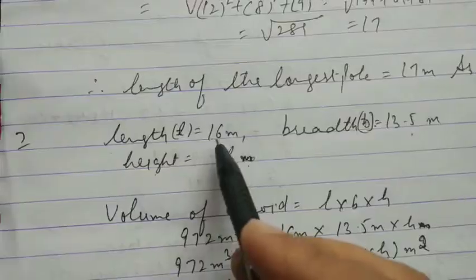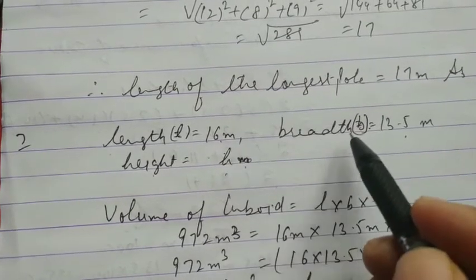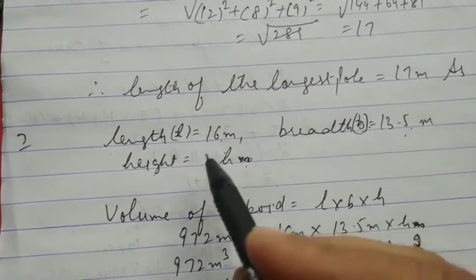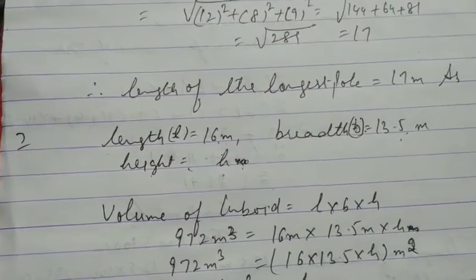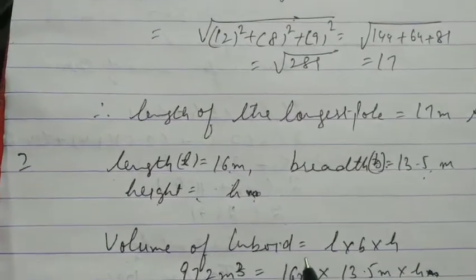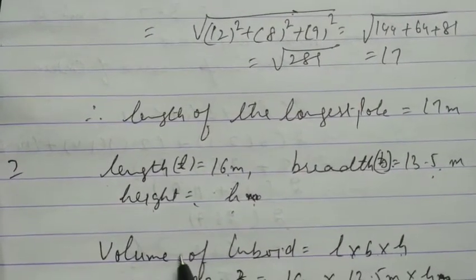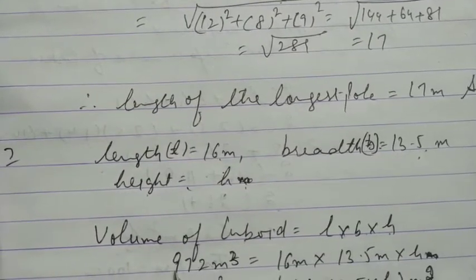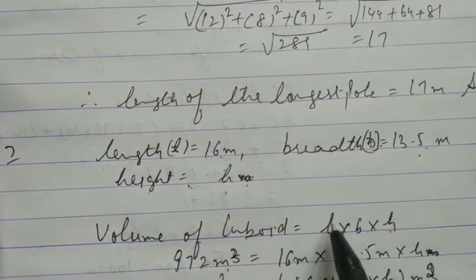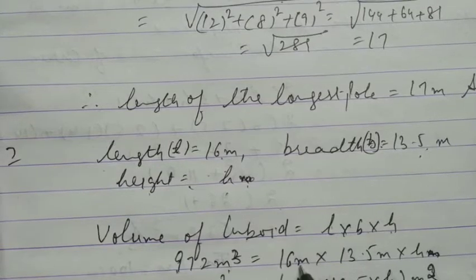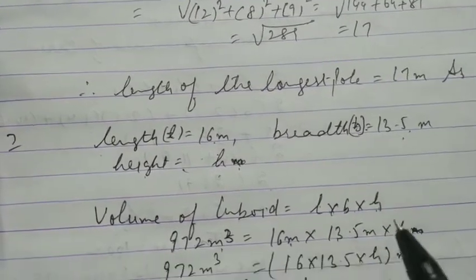Length of cuboid is 16 meter and breadth of cuboid is 13.5 meter. The formula of volume of cuboid is length into breadth into height. The volume given is 972 meter cube, which equals length 16 meter into breadth 13.5 meter into height.